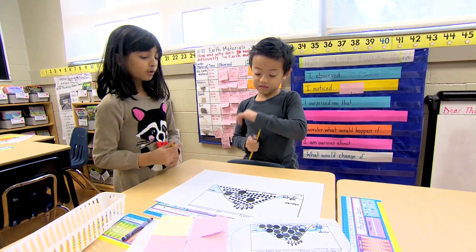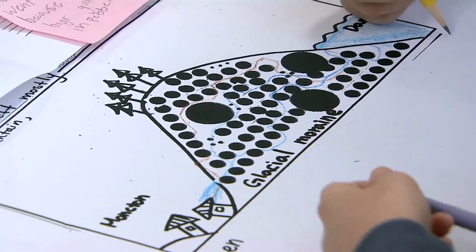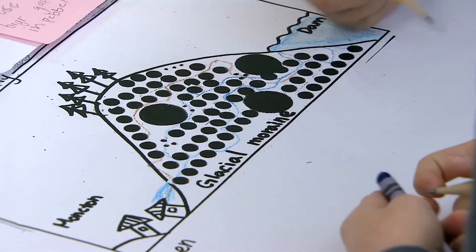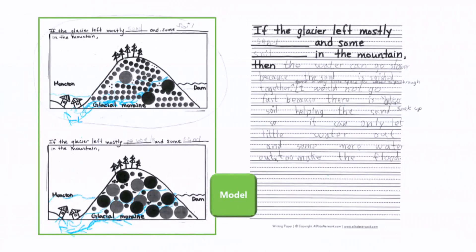We started doing some zoom-in models, zooming in on a part of the initial model. We wanted students to start focusing more on the glacial moraine, so we did another type of model that zoomed in just on the mountain next to the town to help support their thinking about what was going on next to the dam.